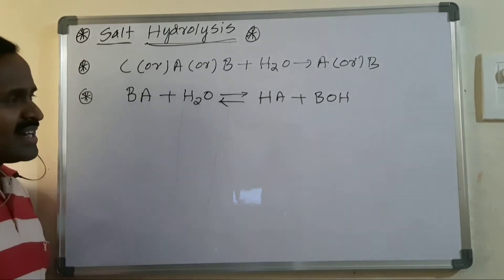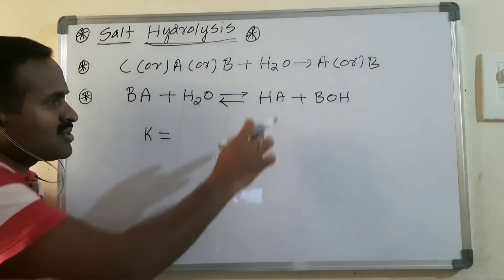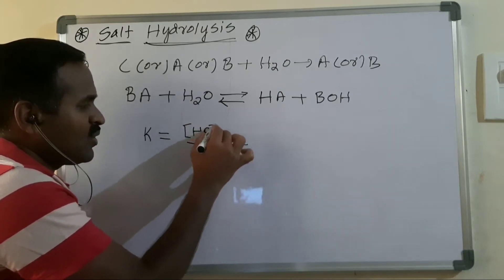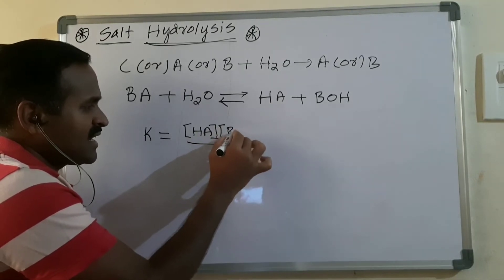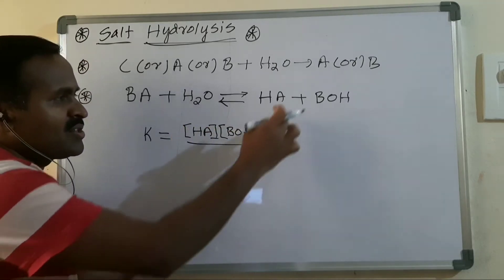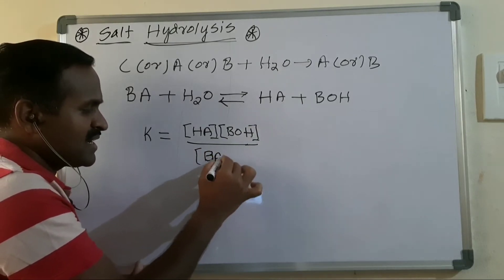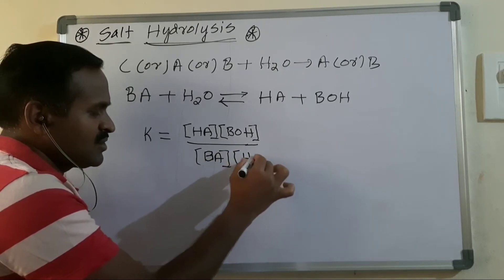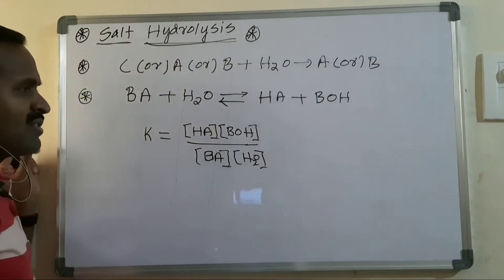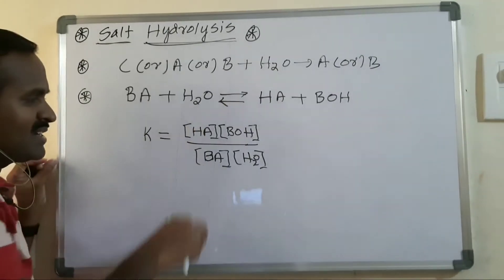For this reaction, an equilibrium is established. The equilibrium constant K equals the product of molar concentrations of products divided by the product of molar concentrations of reactants. The two products are HA and BOH, and the reactants are BA and H₂O.